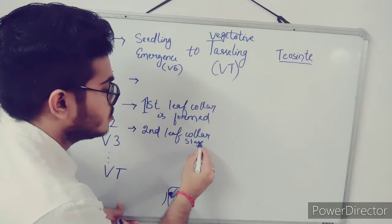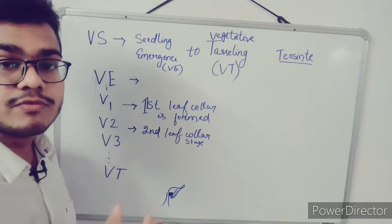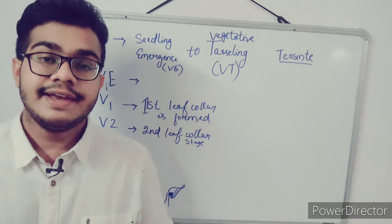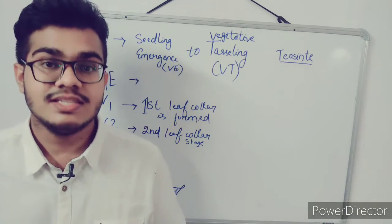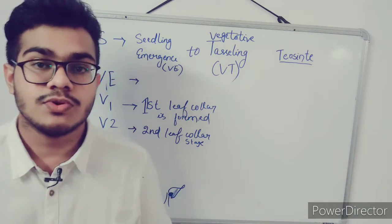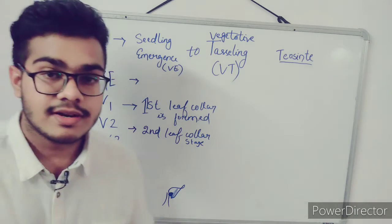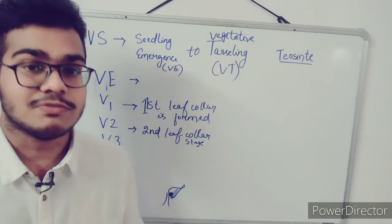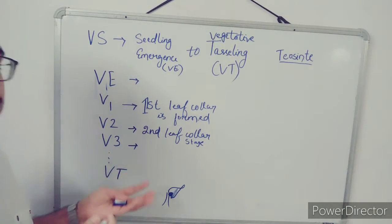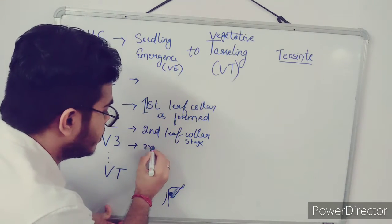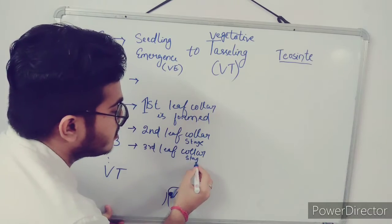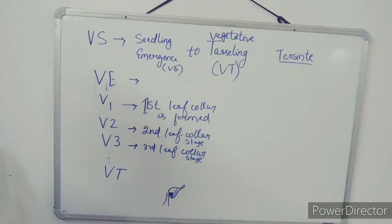In V3, the third leaf collar is visible and you can see around eight leaves on the plant. The number of leaves in a maize plant can range from 18 to 22 in some varieties with good vegetative growth, but generally we consider 13 to 16 leaves per plant.